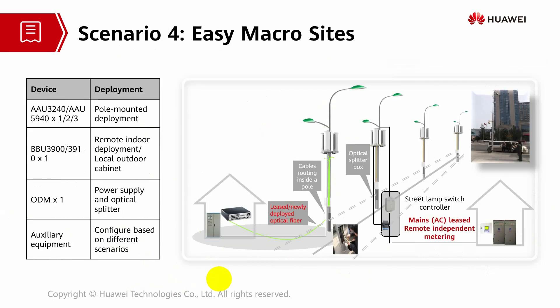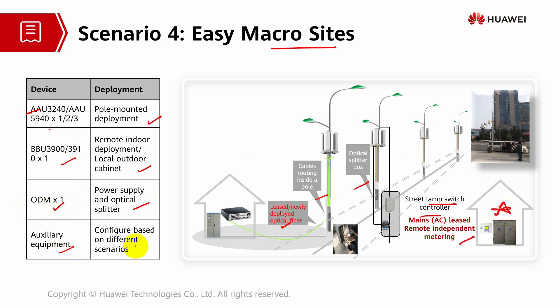For easy macro sites, this solution is used for both indoor and outdoor coverage. It uses newly deployed optical fiber and cables at poles, with a street lamp controller and main AC in remote independent metering installed in a lamp post. The AAU system is pole-mounted while the BBU is in a remote indoor deployment or local outdoor cabinet. ODM, power supply, and auxiliary equipment are configured in different scenarios. It is flexible and easy to deploy because the AAU system can be transported and installed anywhere.